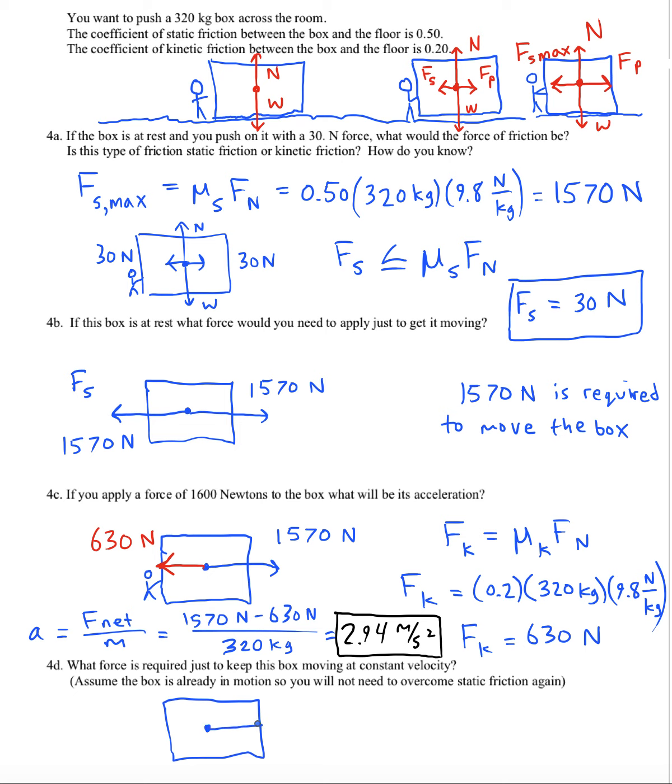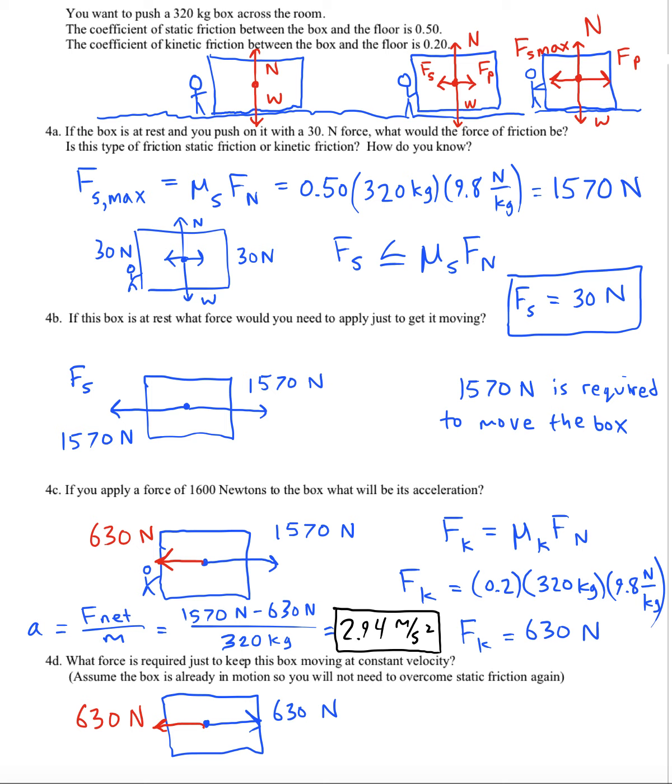Well, the answer is 630 newtons. Because that's the kinetic friction force. And we just have to match that with our push. And we've already got momentum built up from when we accelerated it. Now we can just keep the box sliding across the floor with constant velocity. So that'll be the answer to that question.